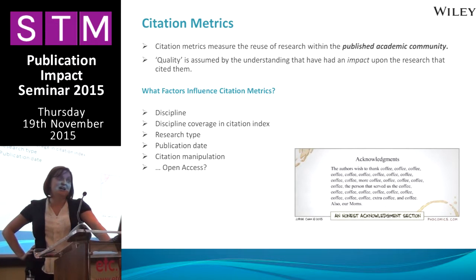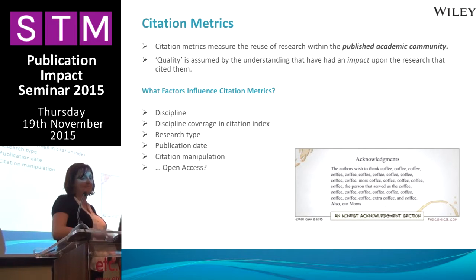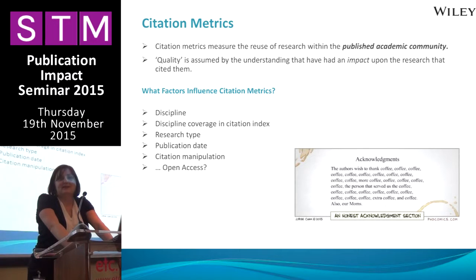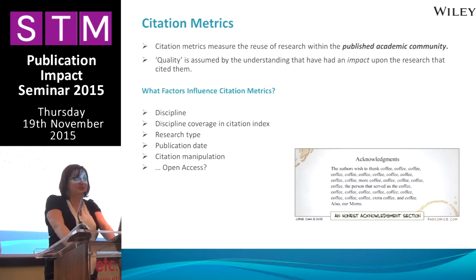Also consider publication date — older papers have been around longer and will get more citations. If you don't set a citation window or a publication window to your metric, what does it really mean? You've also got to take into account citation manipulation, which affects all metrics. One of the big complaints against the impact factor is it's very easy to game — and that's pretty undisputed. However, it is also easy to game altmetrics and usage metrics. Providing these other metrics does not remove that threat.